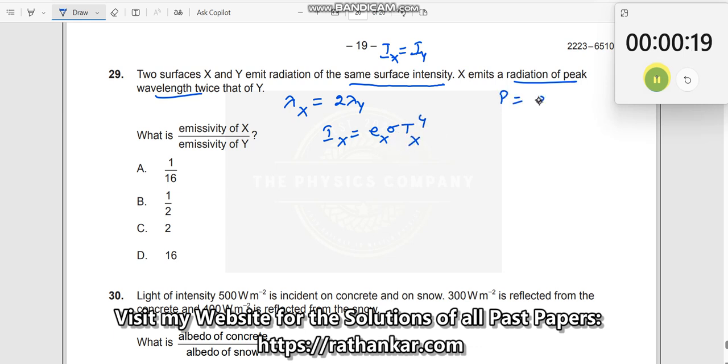See, power is given by sigma a t power 4. See, Stefan Boltzmann law. If I divide this power by area, this is your intensity. So I am having intensity over here because two surfaces x and y, so area he is dividing it. So you get this one.